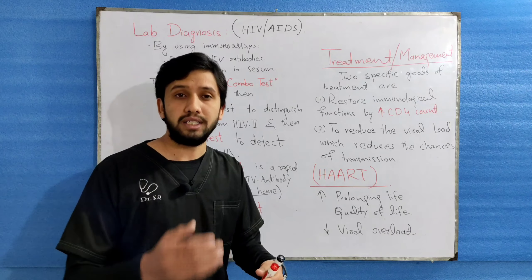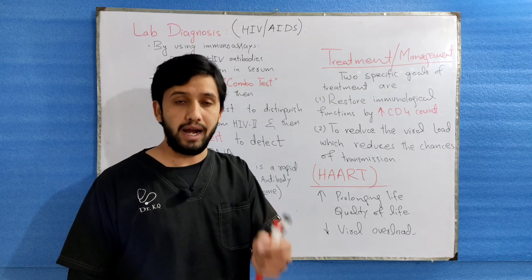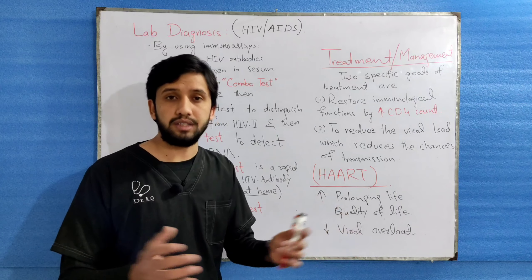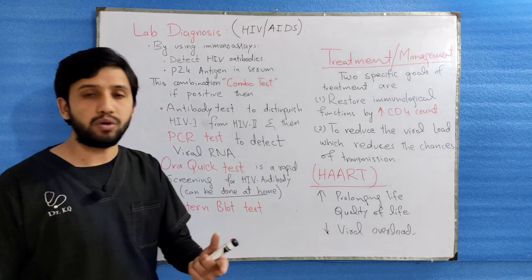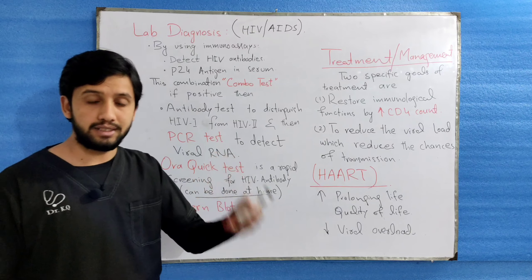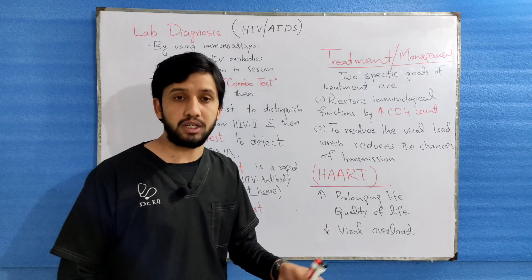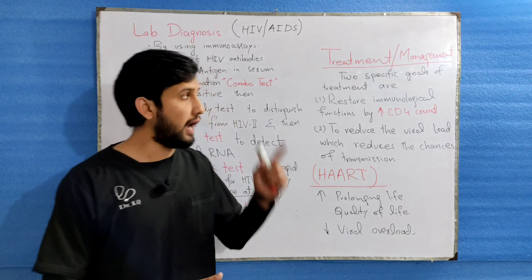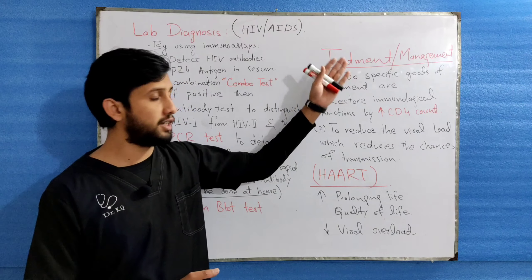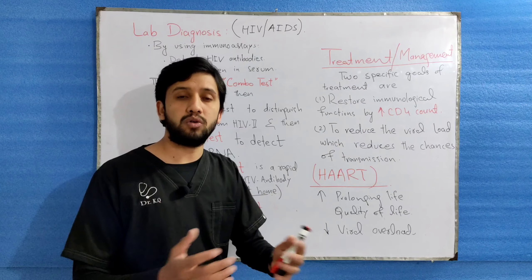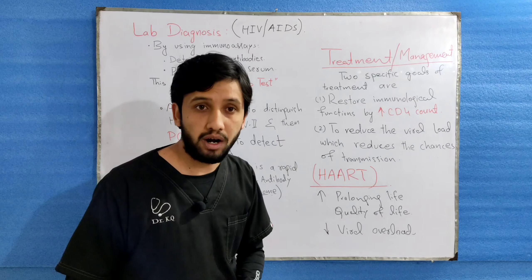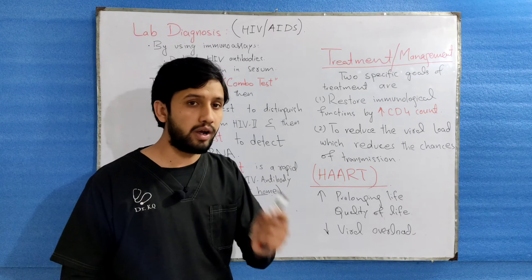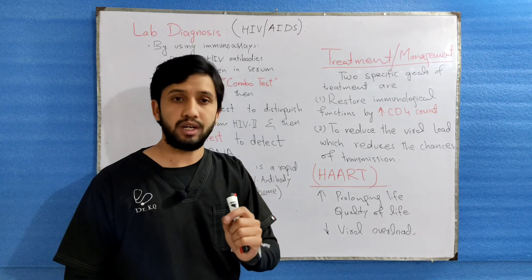The next one is the Western blot test, which is done on HIV positive patients or HIV positive specimens. This test is used to detect HIV antibody and is the confirmatory diagnostic test for HIV. There are other tests which can also be done, such as the CD4 count. CD4 count is drastically decreased in HIV patients, so the CD4 count test can also be done.